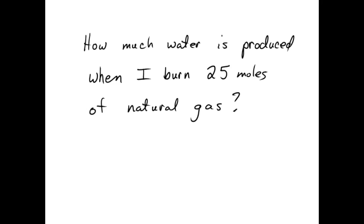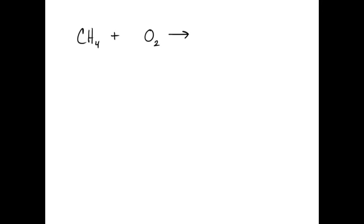So let's just jump into an example. How much water is going to be produced when I burn 25 moles of natural gas? In a stoichiometry problem, the first thing that you always, always need is a balanced chemical reaction equation. So natural gas is CH4, and if I'm burning it, I'm combining it with oxygen. What will my two products be?